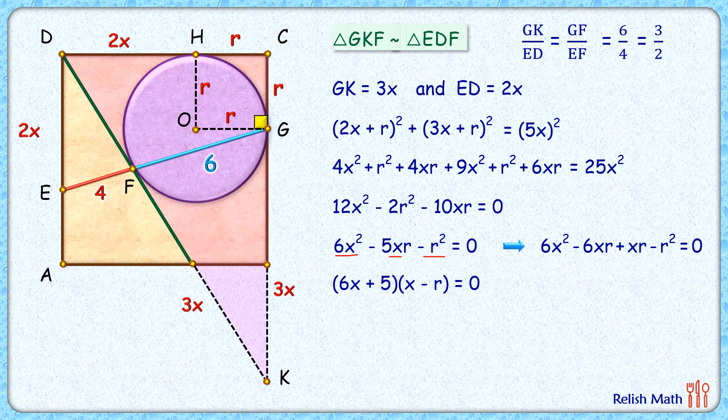Now if you look carefully, the first term gives x = -5/6, which is not possible. The second factor gives x = r. So this variable x which we had assumed is actually equal to r centimeters.